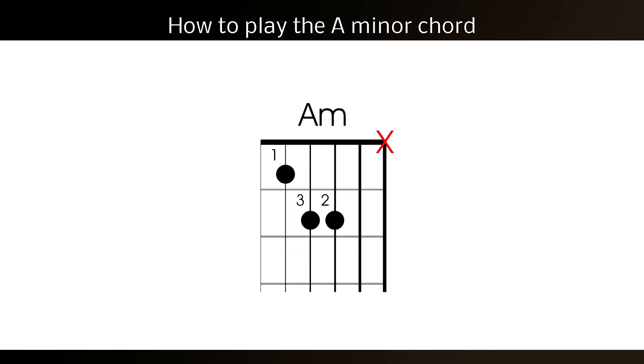You'll notice the X on the bottom E string of the chord chart. This means you shouldn't strum that string, so strum from the A string upwards.